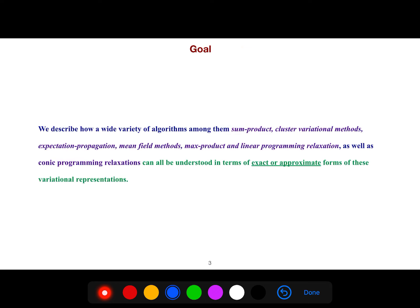So we describe how a wide variety of algorithms, among them the sum product, cluster variational methods, expectation propagation, mean field methods, max product and linear programming relaxation, as well as conic programming relaxation can all be understood in terms of exact or approximate forms of variational representation.